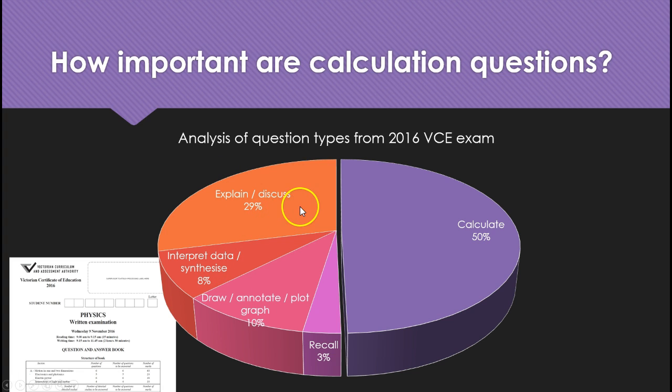And that left nearly a third of the paper, a little less than a third of the paper where you're asking to explain or discuss a concept. So calculations are clearly really important in this post-16 qualification and my experience of A level, IB, international GCSEs, it's no different. The breakdown is about the same.